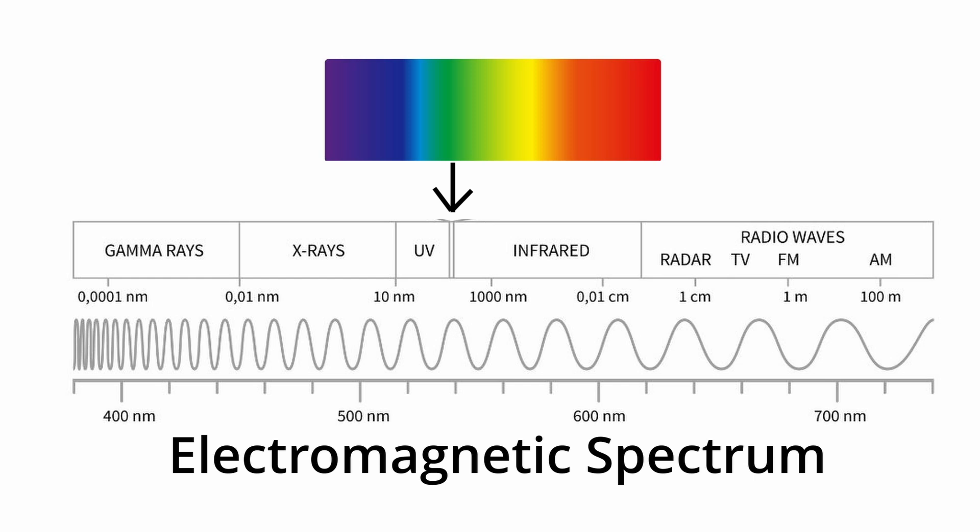All colors we can see are part of what we call visible light. And visible light is part of what's called the electromagnetic spectrum, which describes all kinds of light depending on frequency and wavelength.